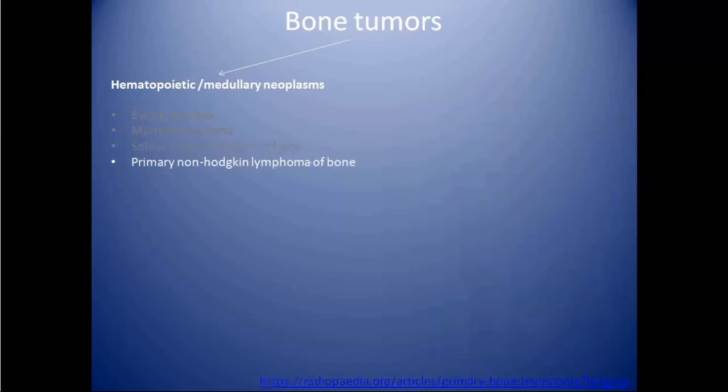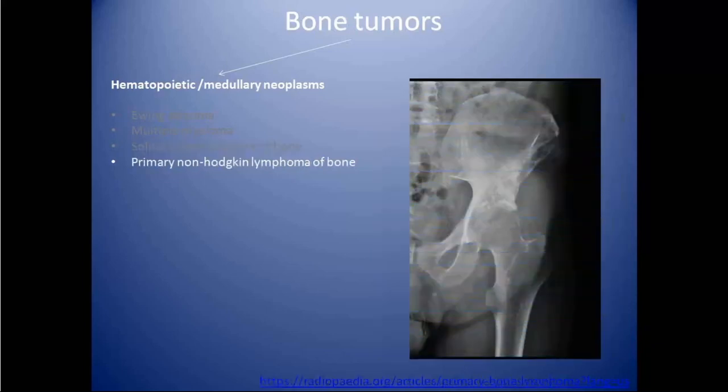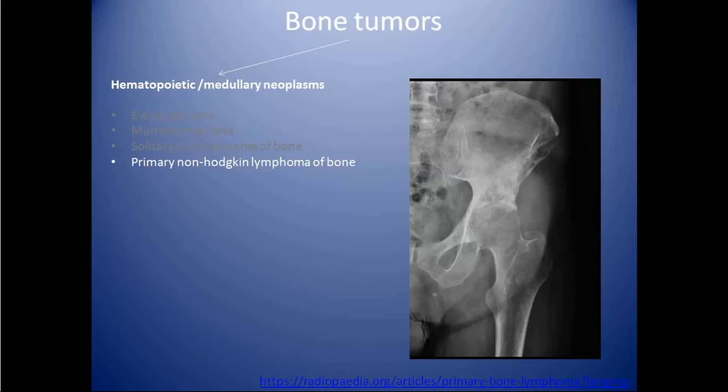Next is primary non-Hodgkin lymphoma of bone, which is characterized by a poorly defined permeative osteolytic lesion in the bone.